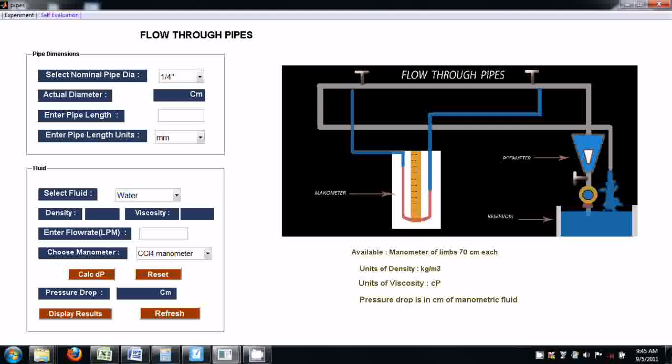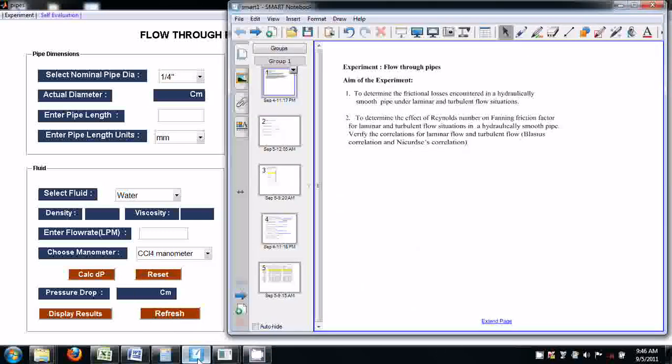This is the experimental window. The aim of this experiment is to determine the frictional losses encountered in a hydraulically smooth pipe, and to determine the effect of Reynolds number on friction factor for laminar and turbulent flow.